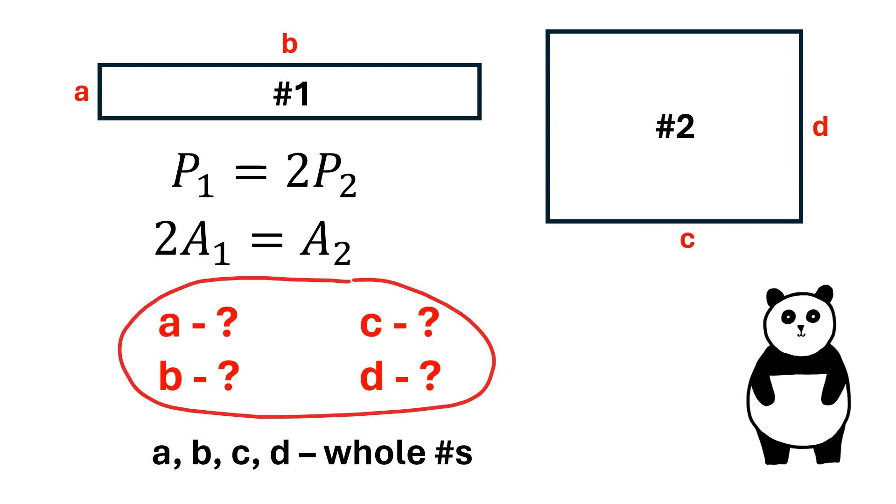We need to solve for the sides of both rectangles. A, B, C, and D must be whole numbers.